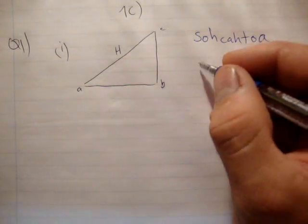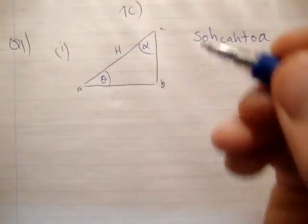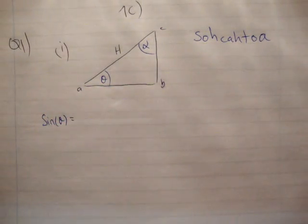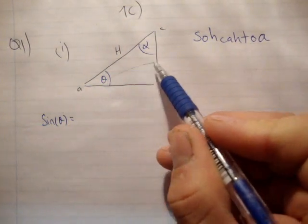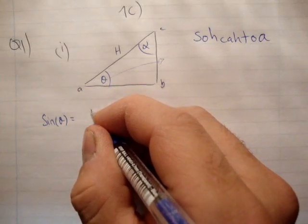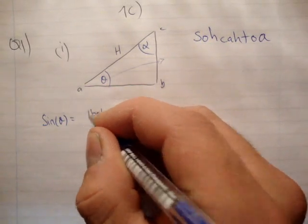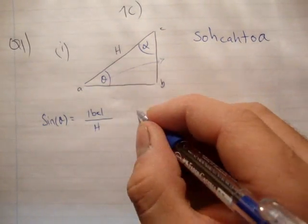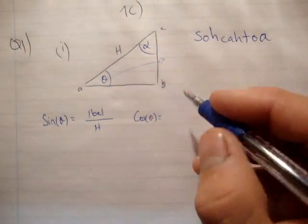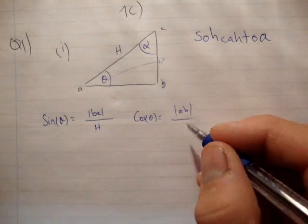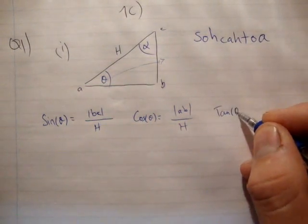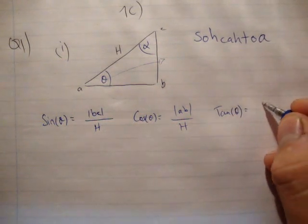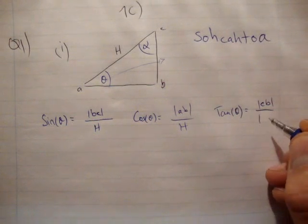Let's say we'll call this theta and this one alpha. We're going to go sine theta equals opposite over hypotenuse. The opposite from theta is BC or CB. Remember the straight brackets means the magnitude or the length, and it's that of the hypotenuse H. Cos theta equals the magnitude of AB over H. And tan theta equals opposite over adjacent, which would be the magnitude of CB over the magnitude of AB.